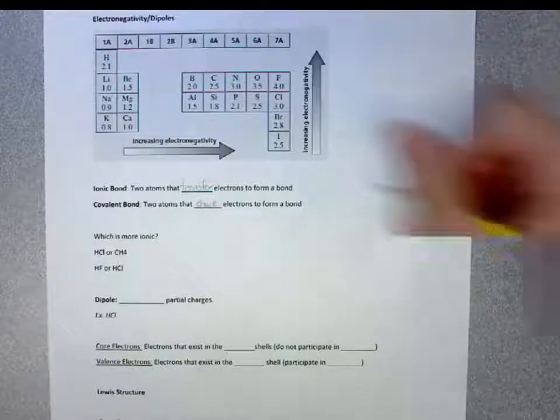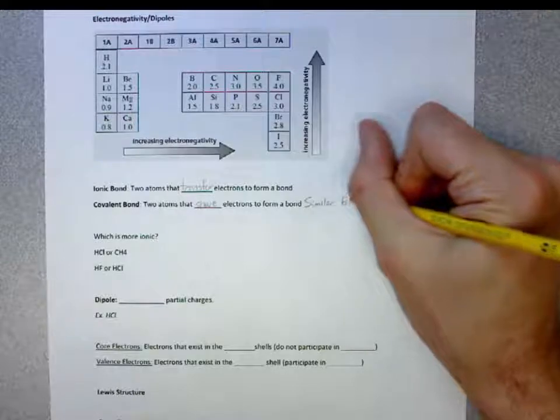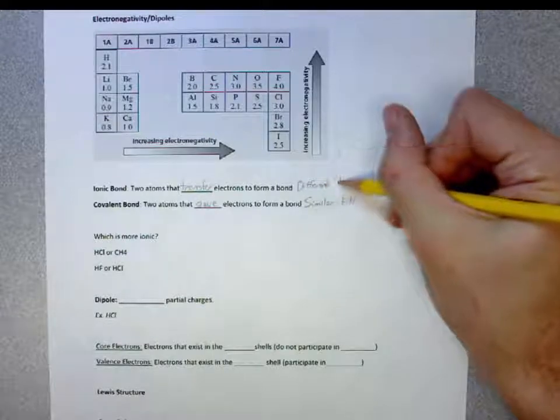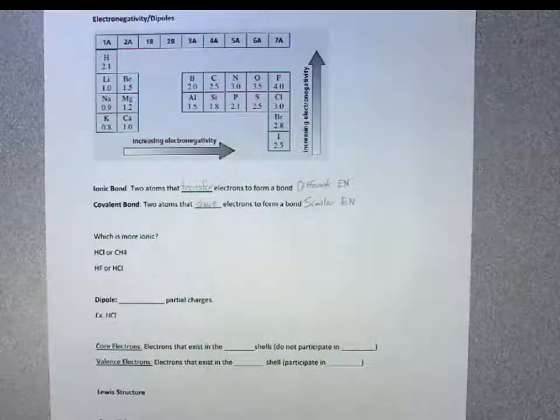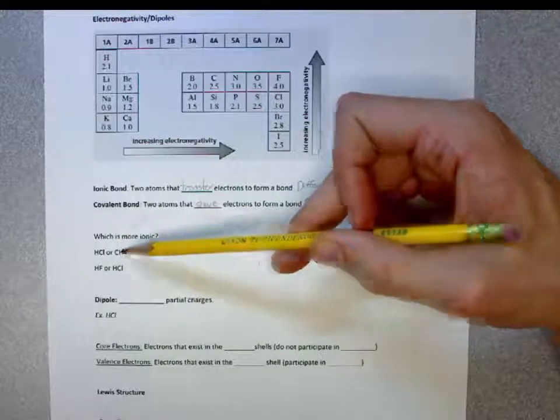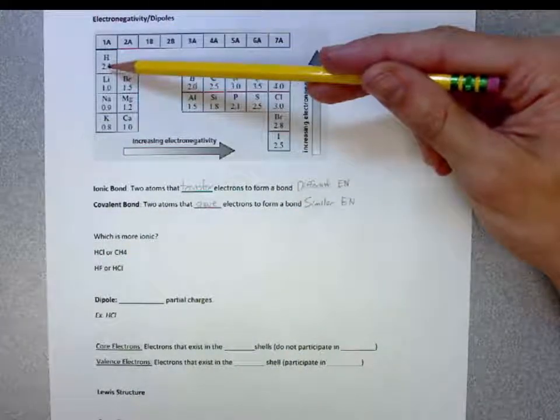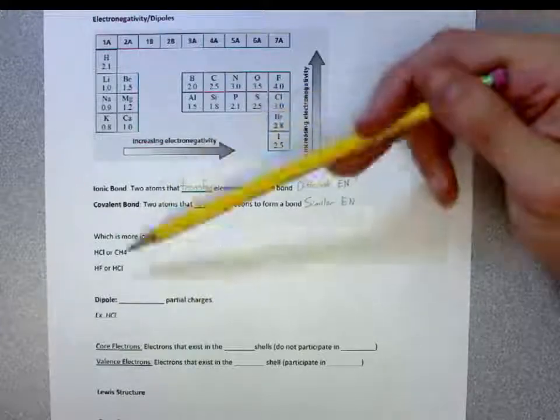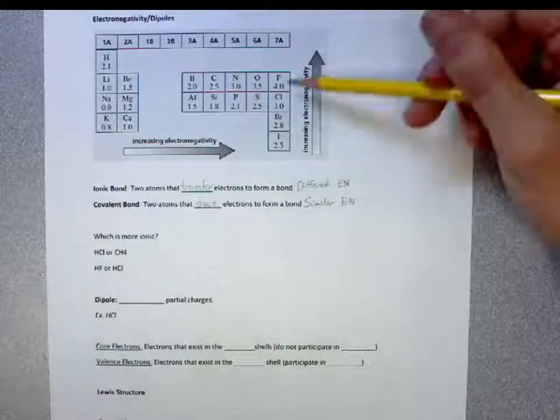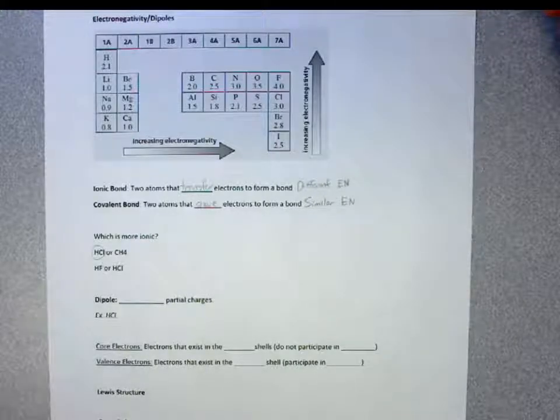With a covalent bond, we're going to have two atoms come together with similar electronegativity. And with ionic, there's going to be different electronegativity. Which is more ionic? HCl or methane? Well, if you look at HCl, we have 2.1 and 3 or we have 2.1 and 2.5. The greater electronegativity difference is going to be HCl, so it's more ionic.